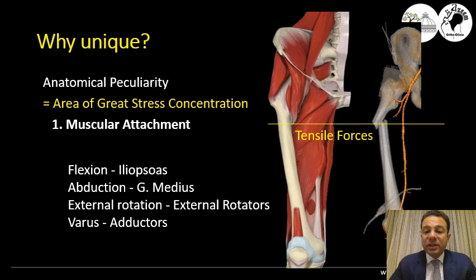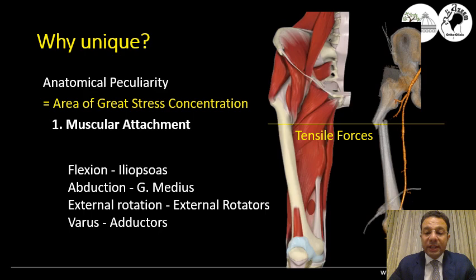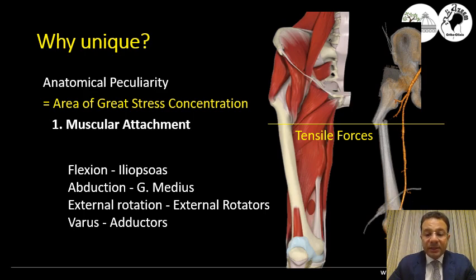This fracture is unique. If you look at different long bones like the humerus or the tibia, you will not find a special area taken from the diaphysis to have a special consideration — except in the femur, like the subtrochanteric area. So why is this area taken from the diaphysis to have a special consideration?